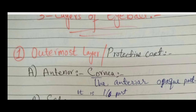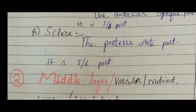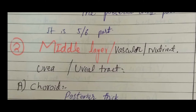The eyeball has three layers: outer, middle, and inner. The outer layer, also known as the protective layer, consists of two parts: the anterior opaque part known as the cornea, which is about one-sixth of the outer layer, and the posterior white part known as the sclera, which is about five-sixths. The middle layer is also known as the vascular layer because it is rich in vascular tissue, blood vessels, nerves, and veins.